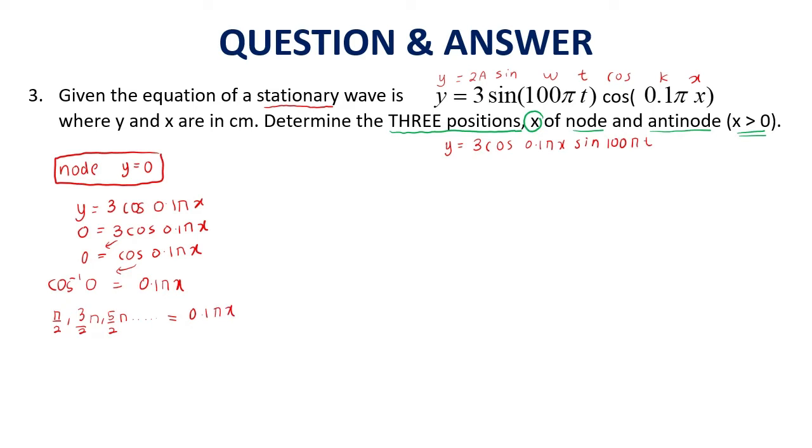We cancel π, and therefore X equals 5, 15, 25... cm. These are the positions of nodes.